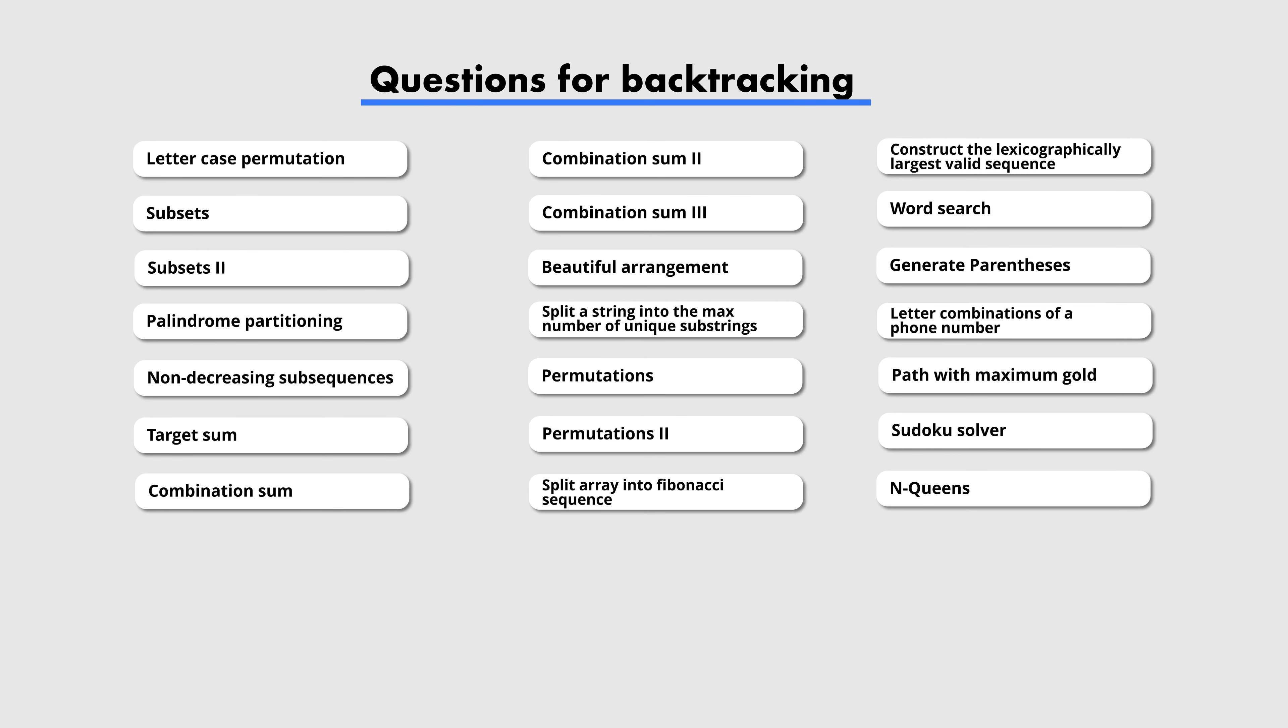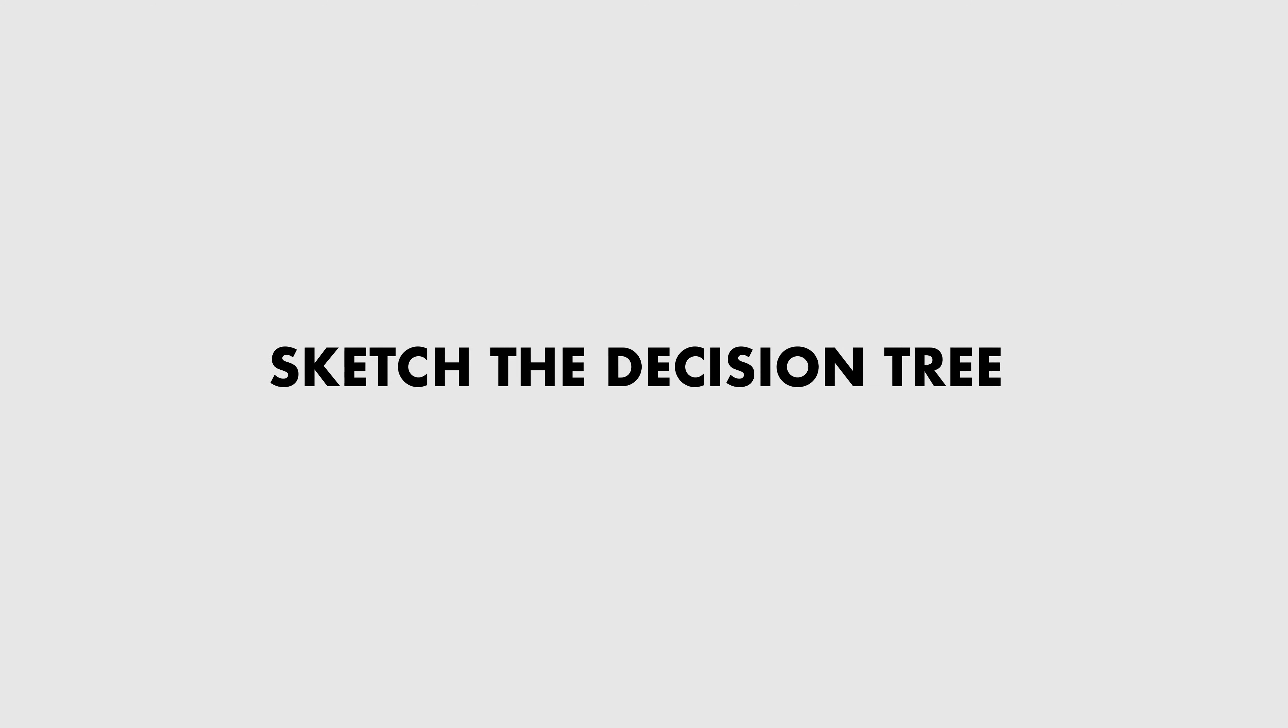Again, initially it's going to be tricky to see how you want to do the preprocessing for the next state, and what is the next state that you actually want to traverse, but just like with basic recursion, make sure you sketch the decision tree so you can visualize which nodes you want to traverse and in what order.